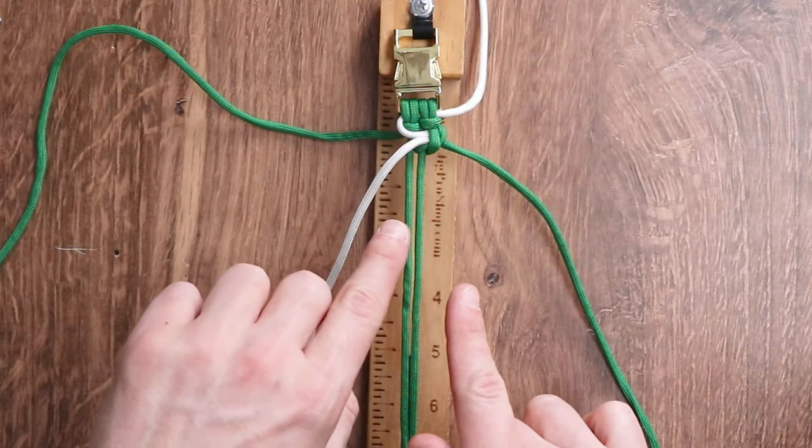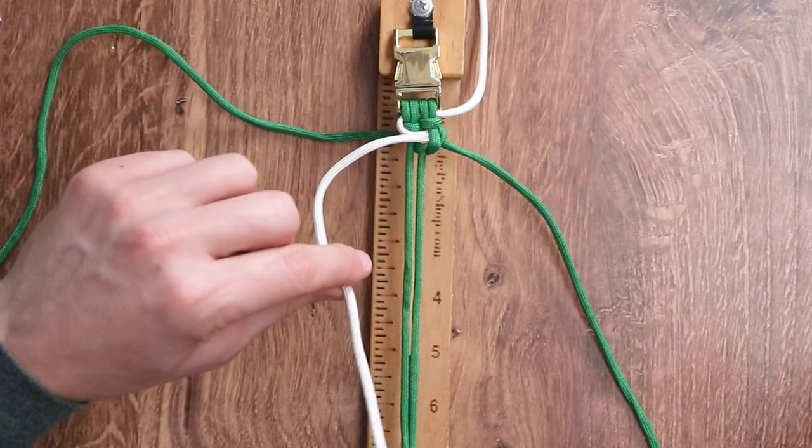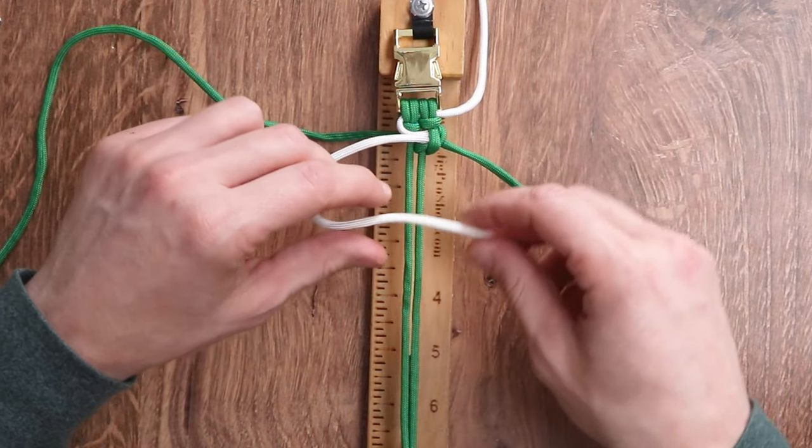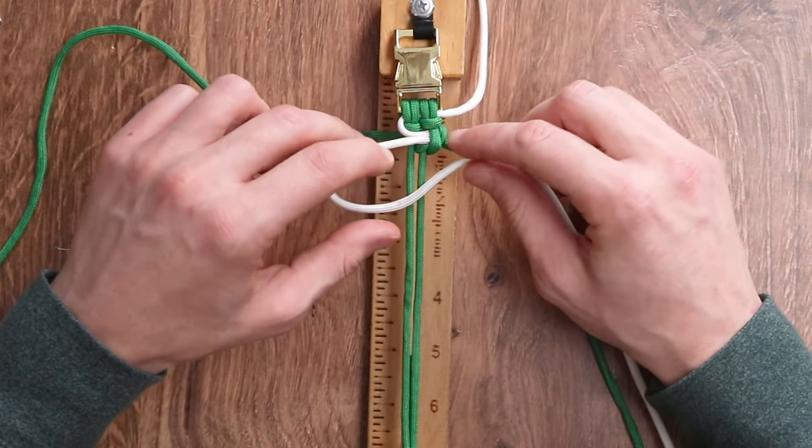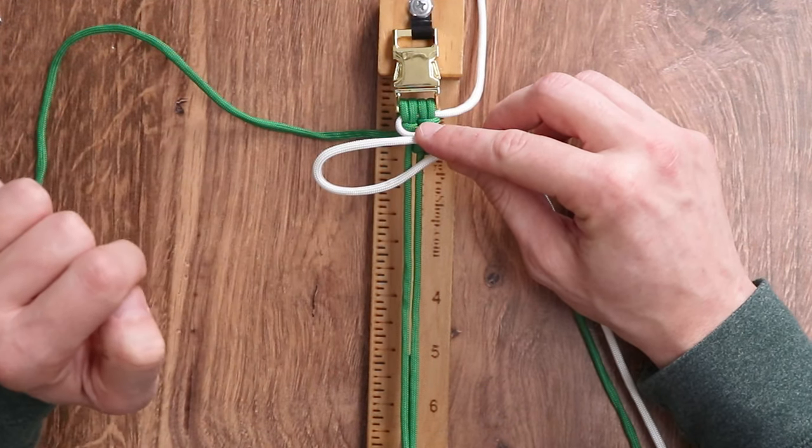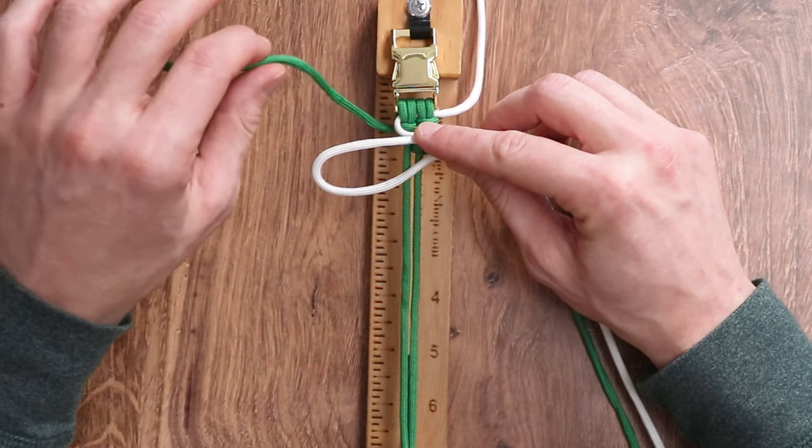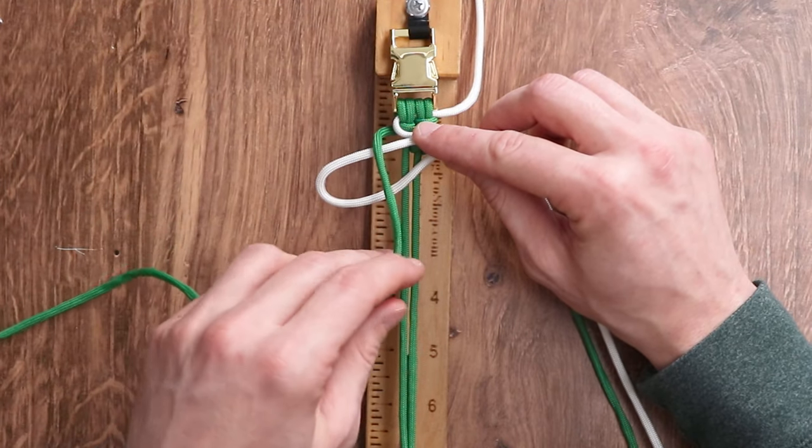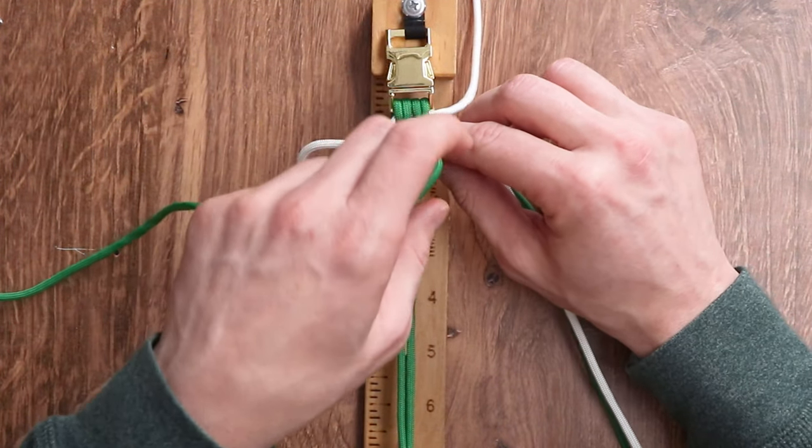We're going to show you how to do it again. This time, we're going to do it on the left side. So first step, we're going to take our white paracord from the left to right side and make that loop on the left side. This time, we're going to take the left working strand and go over top of the white paracord.